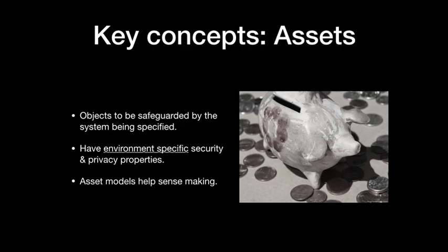Another key concept is assets — the objects being safeguarded by the system being specified, the things of value. Assets could be information, software, or hardware. They have environment-specific security and privacy properties such as confidentiality, integrity, availability, and anonymity. In Kairos, you can create models of assets based on UML class diagrams, which help you understand how assets relate to each other, and you can relate assets to other objects as well.